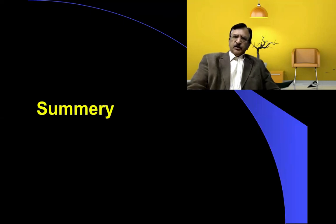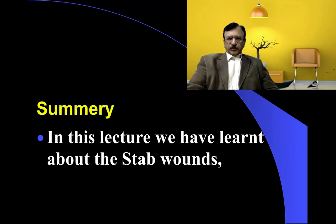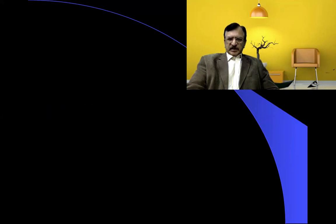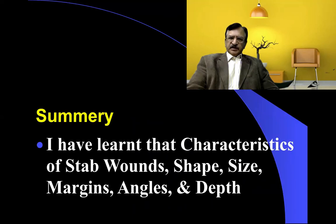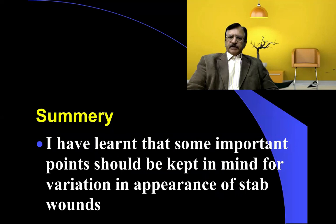In summary, this lecture continued the discussion of the stab wound. The general features and characteristics were discussed, including the definition, direction, shape, size, margins, angles, and depth. We also learned about various variations depending on thrusting force, direction, and how multiple entry modes can be seen.